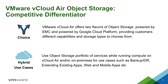Now let's take a look at our competitive differentiation. VMware offers two flavors of object storage: object storage powered by EMC and powered by Google Cloud Platform. Customers can pick one or both services based on location, use cases, features, etc. The two services offer slightly different capabilities and storage types to choose from. You can also run compute on vCloud Air or on-premises and use the object storage portfolio for use cases such as backup, extending existing applications, and web and mobile apps. For example, in the case of backup, if a disaster occurs, you can rehydrate the virtual machine in vCloud Air VPC on-demand or dedicated cloud very easily without any changes, because of the common vSphere platform.